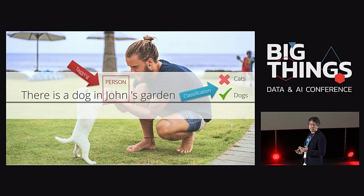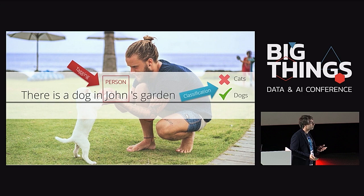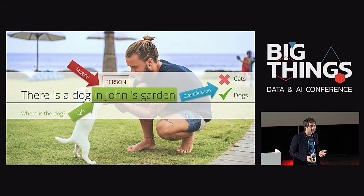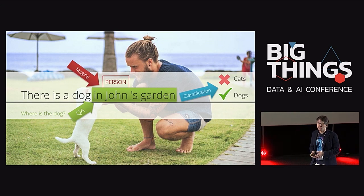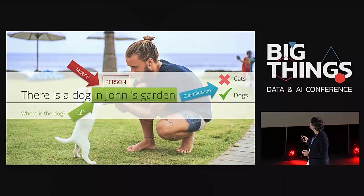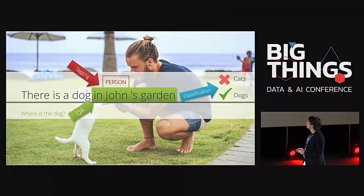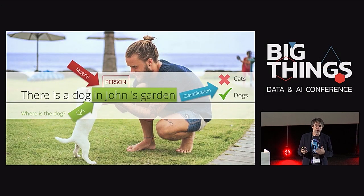We can also do question answering: I ask the document 'Where is the dog exactly?' and if the model is clever enough, it should highlight the region of the document that says the dog is in John's garden.